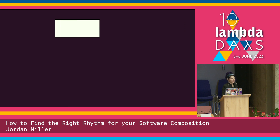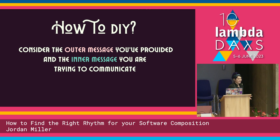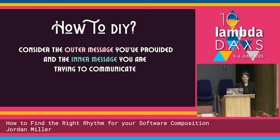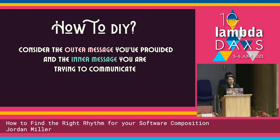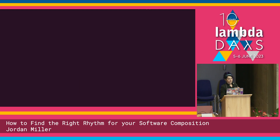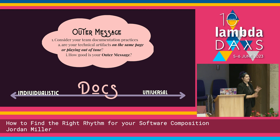I made a promise in this abstract about how to find the right rhythm for your software composition. But the thing is, each band is different — you all have different bands. So how can you replicate this? I'm not going to say everybody should just throw a documentation fest at their company. Every band is different and everybody needs a different solution. Consider the outer message you've provided and look at the inner message you're trying to communicate — that's the code. Look at your documentation, whether it's a README, a wiki, or whatever technical artifacts you have supporting and existing alongside the code.